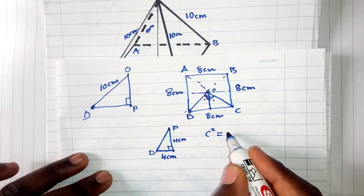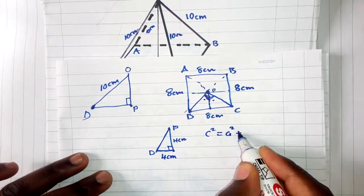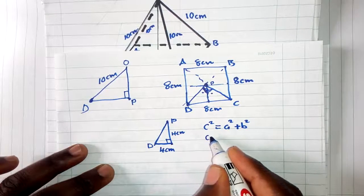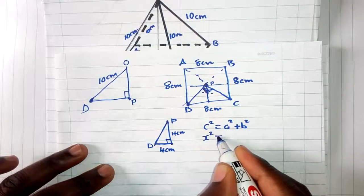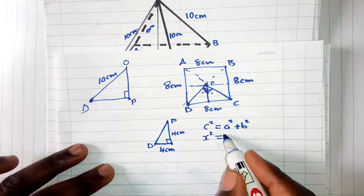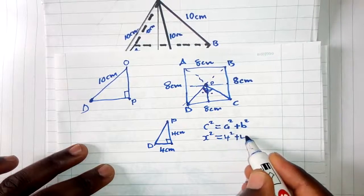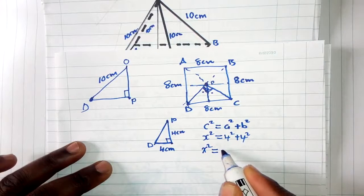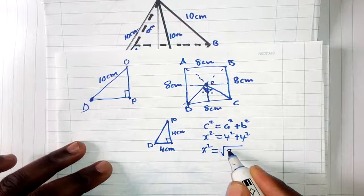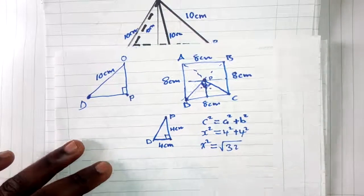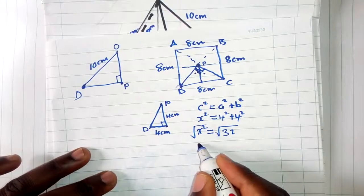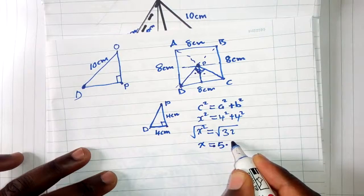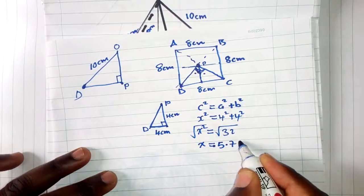We can use Pythagoras' theorem: c² = a² + b². Our unknown is x², and our known sides are 4 and 4. So x² = 4² + 4² = 16 + 16 = 32. The square root of 32 gives us 5.7 centimeters.